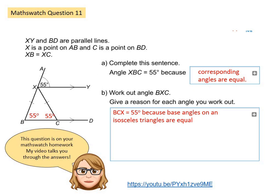This is called angle BCX because if I start at B, travel to C and go up to X I've created this angle. The reason for my answer is because base angles on an isosceles triangle are equal. If I then add those two angles together and take it away from 180, I know that this angle BXC is 70 degrees and my reason is because angles in a triangle add to 180 degrees.